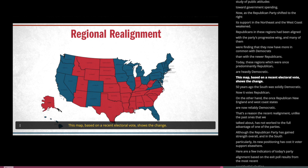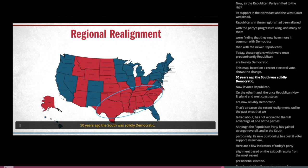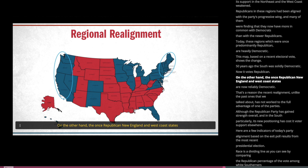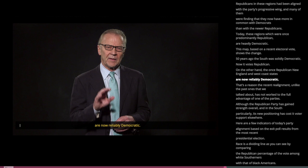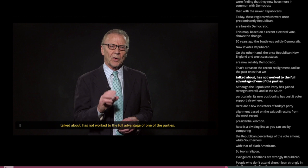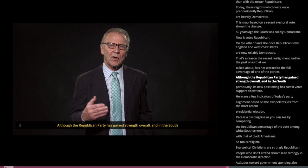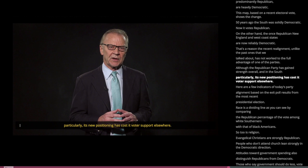This map, based on a recent electoral vote, shows the change. Fifty years ago, the South was solidly Democratic — now it votes Republican. On the other hand, the once Republican New England and West Coast states are now reliably Democratic. That's a reason the recent realignment, unlike the past ones, has not worked to the full advantage of one of the parties. Although the Republican Party has gained strength overall, and in the South particularly, its new positioning has cost voter support elsewhere.